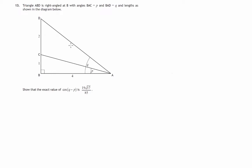We have a right angle triangle ABD with various lengths: one, two, and four. There's angle P, and this large angle here is Q. We're asked to show the exact value of cos(Q minus P) is 19√17 over 85.